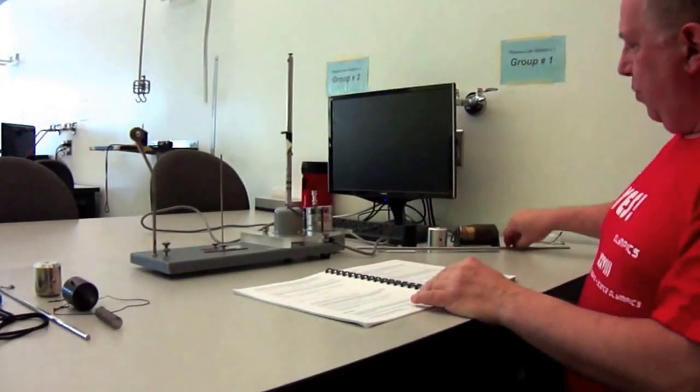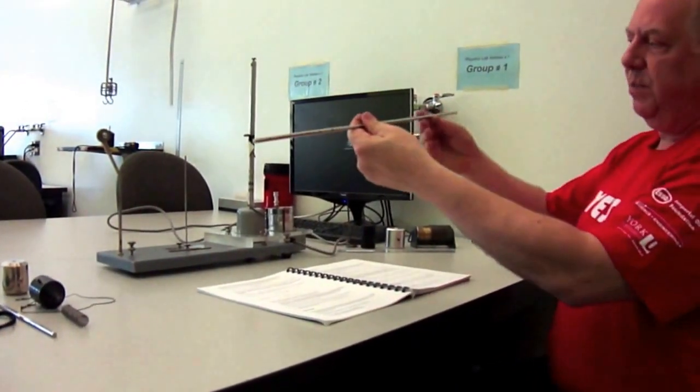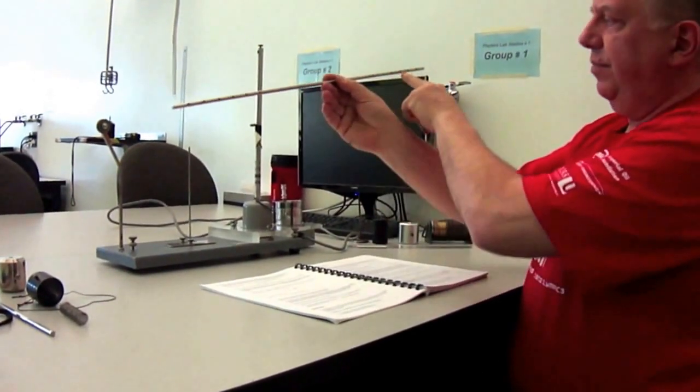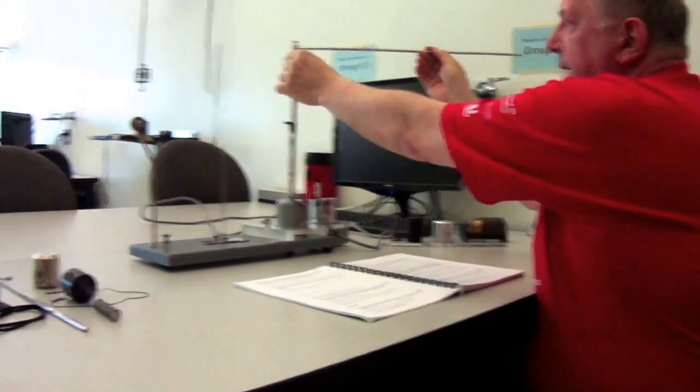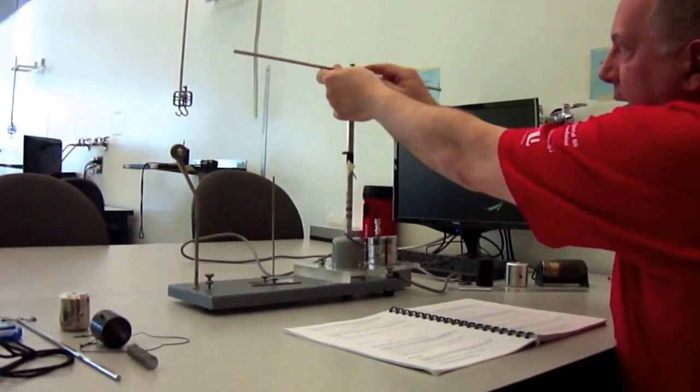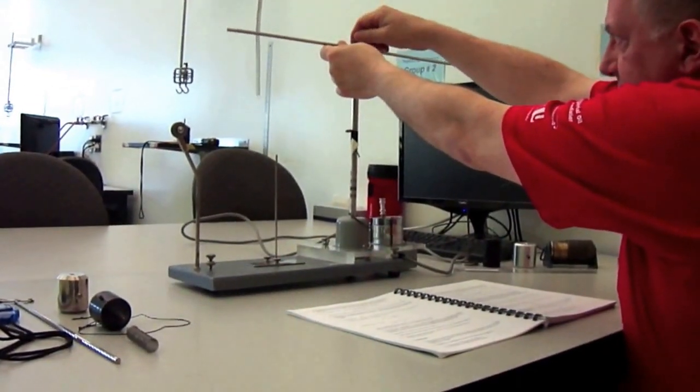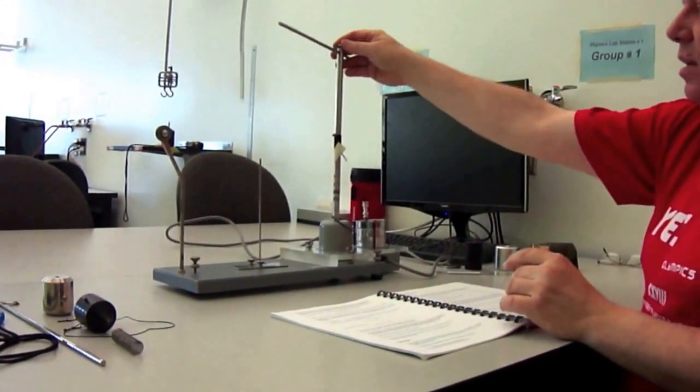We're going to take this longer crossbar with little holes in either end. We pass it through the hole at the top of this vertical shaft and we lock it approximately. We lock this little screw, tighten it approximately so this bar is centered.